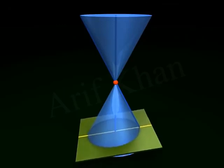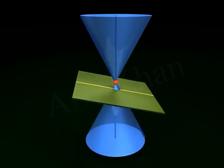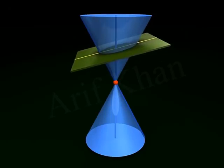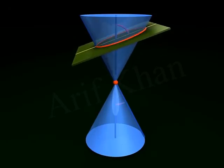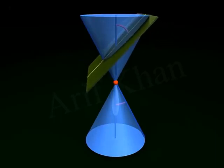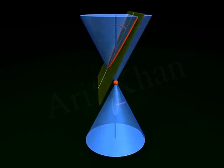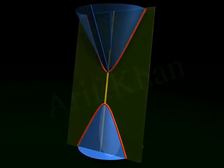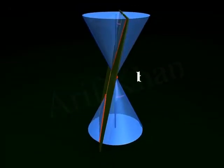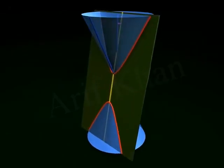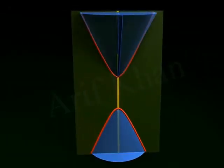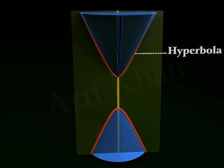Hyperbola. The plane intersects only one nap of the double right circular cone as long as the angle between the plane and the vertical axis is greater than or equal to the vertex angle. However, if the plane intersects the vertical axis at an angle smaller than the vertex angle, the plane intersects both naps of the cone to form an open curve called a hyperbola, which has two disjoint curves.